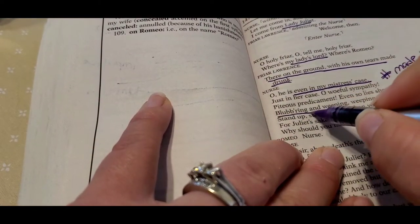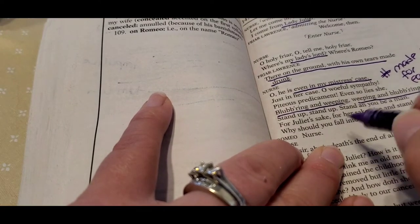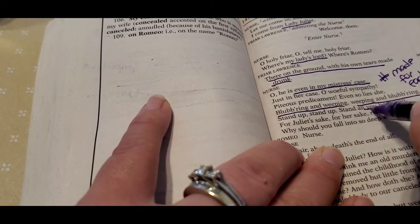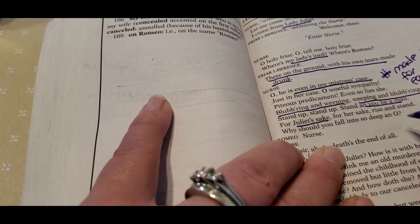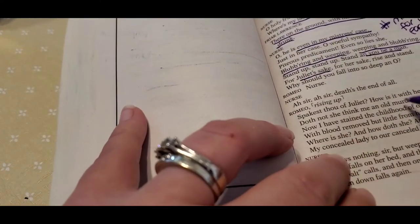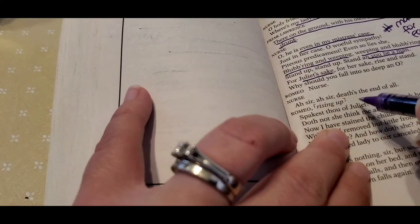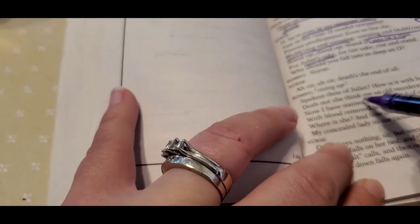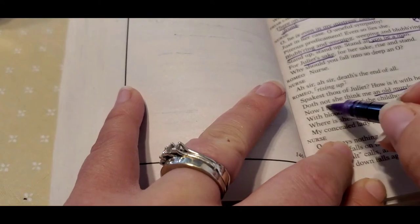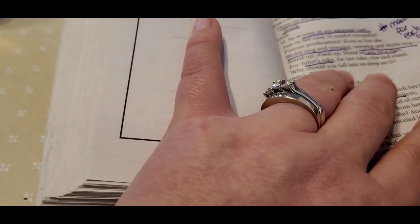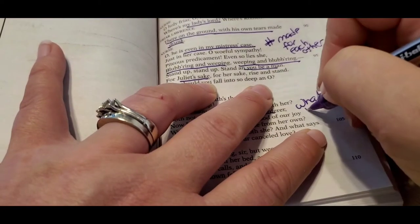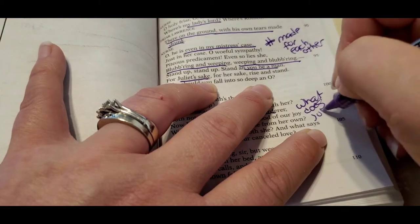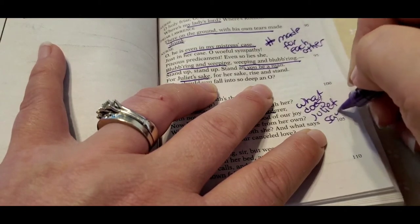And she lies on the ground blubbering and weeping and weeping and blubbering. And she says to Romeo, stand up and be a man. And for Juliet's sake. And so she says, sir, death's the end of it all. And he says, how do you speak of, how is it with her? Does she not think of me a murderer? So what does Juliet think?